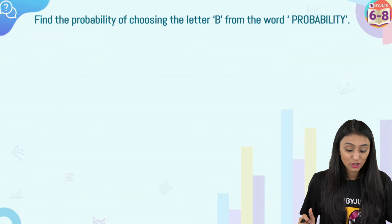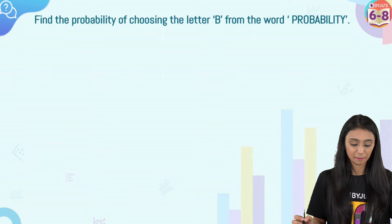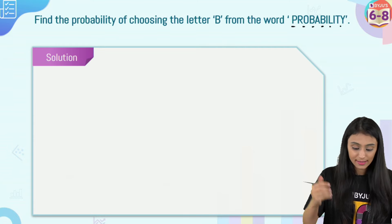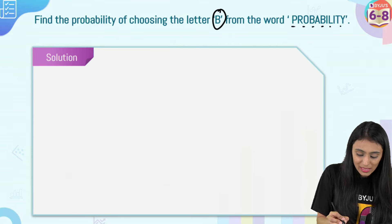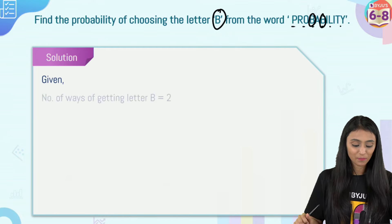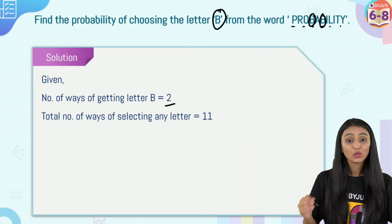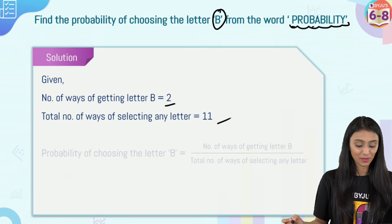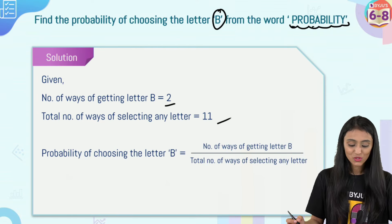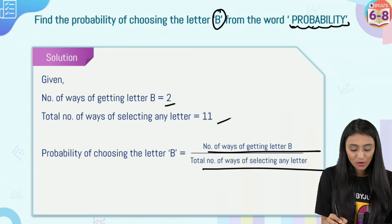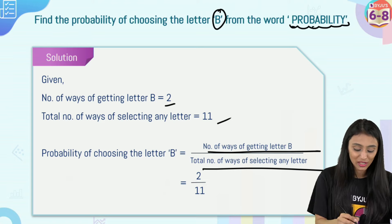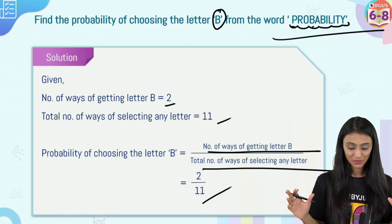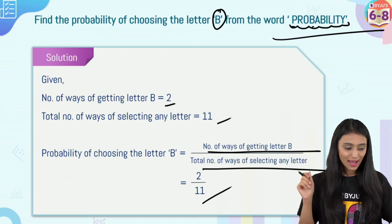Example: Find the probability of choosing the letter 'b' from the word PROBABILITY. Total outcomes = total letters = 11. Favorable outcomes = number of times 'b' appears = 2. So, probability = 2/11. That's how we apply the formula to find the probability of any event.